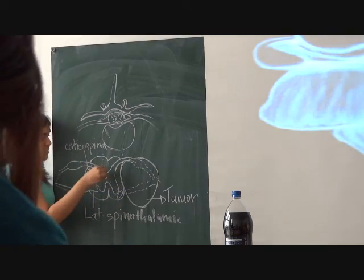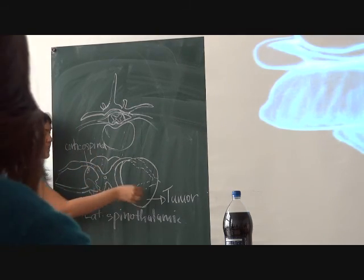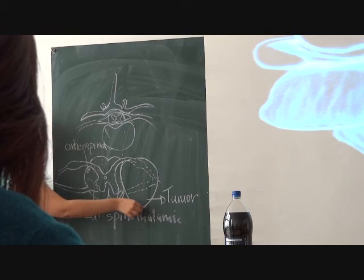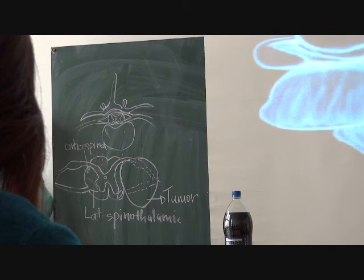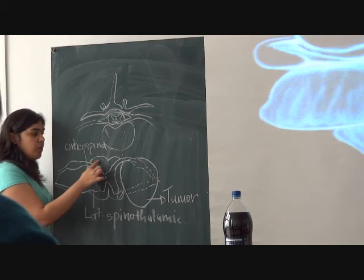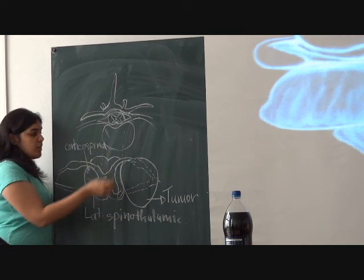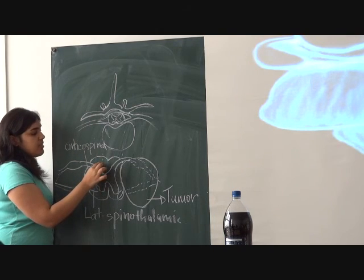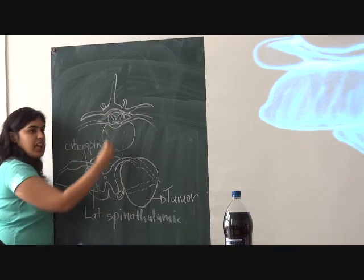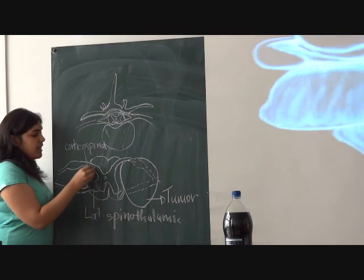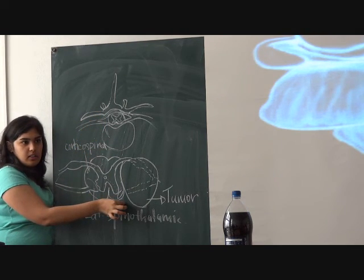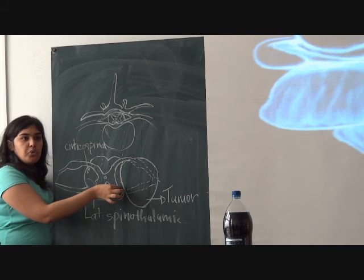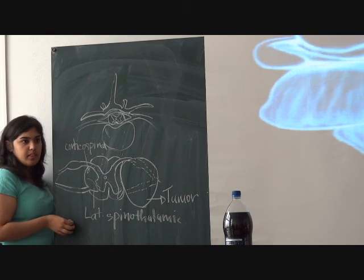So if there is any damage to the spinal cord and the spinothalamic tract is involved, you will lose pain and temperature sensation on the opposite side — depending on the lesion. But your proprioception of the same side will be lost, because the dorsal column does not cross in the spinal cord. It crosses in the medulla, so until then this pathway is carrying sensation from the same side.